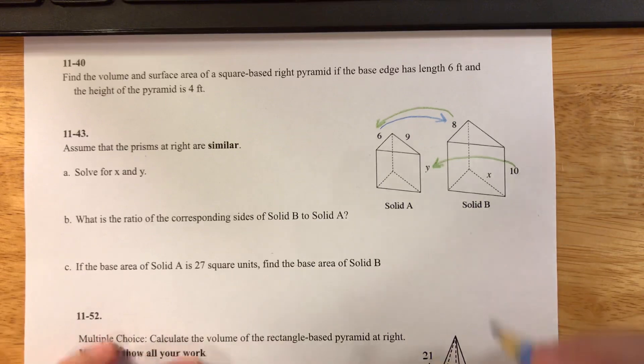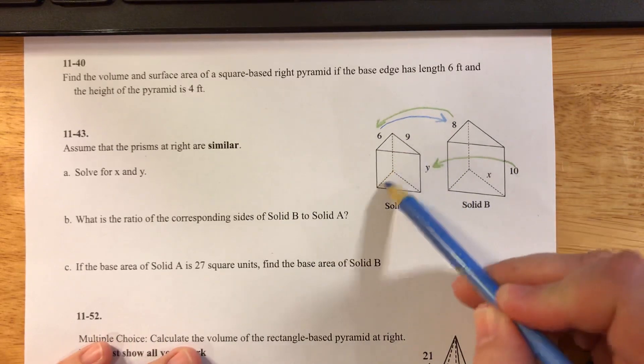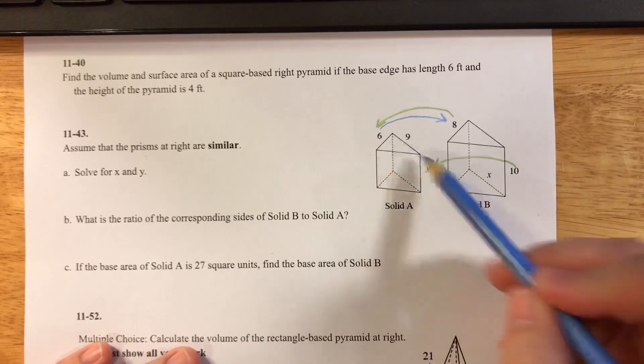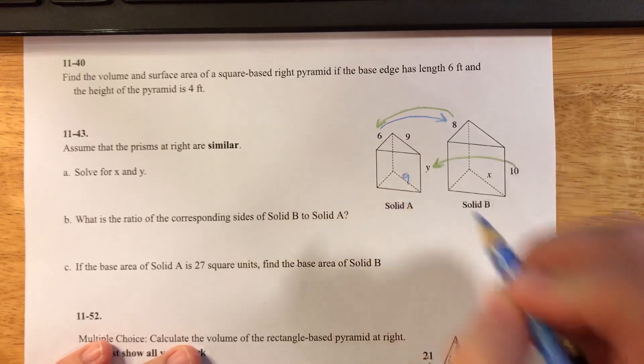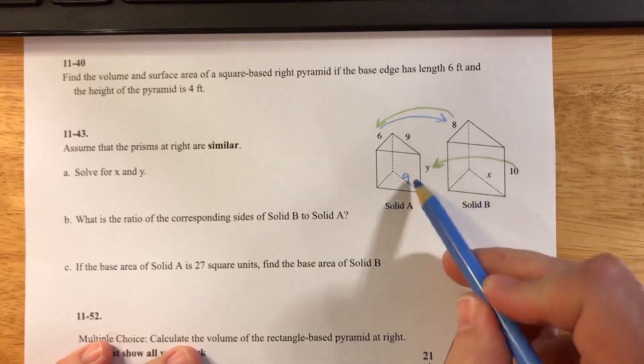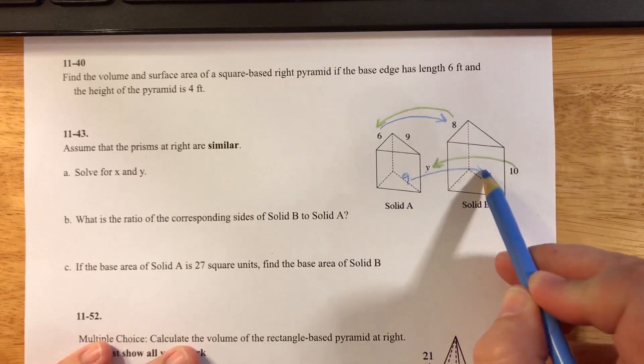Here I know that the two bases of my prisms are congruent shapes. So if this length is 9, that means this length down here is also 9. That's gonna help me figure out what x is.